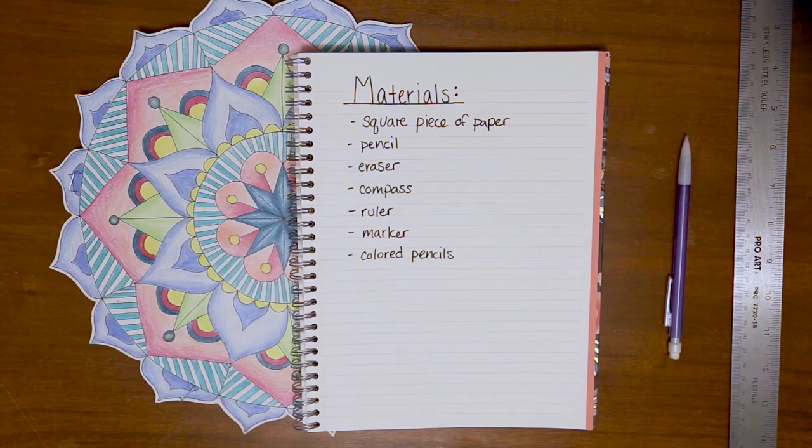The materials you will need for this project are a square piece of paper. The piece of paper I'm going to be using is eight inches by eight inches. However, you can use whatever size piece of paper you would like, you just need it to be a square. You'll need a pencil, an eraser, a compass, a ruler, a black marker, and colored pencils.